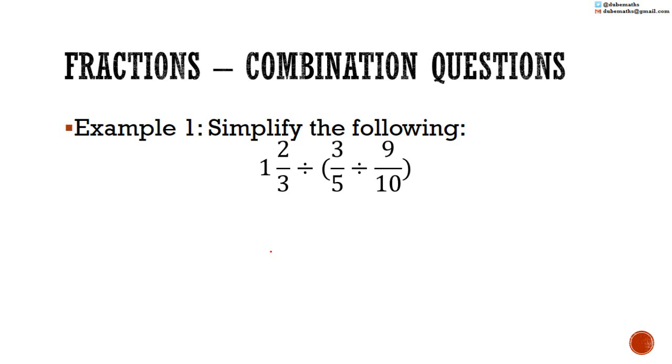Some combination questions and fractions. Simplify the following: 1 and 2 thirds divided by, in brackets, 3 fifths divided by 9 tenths.